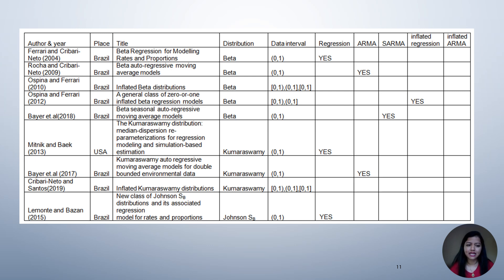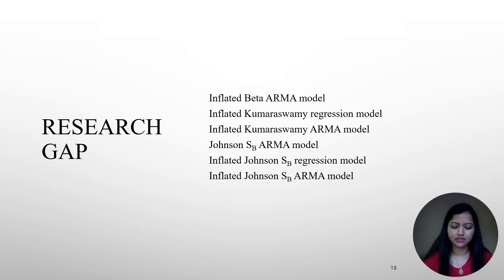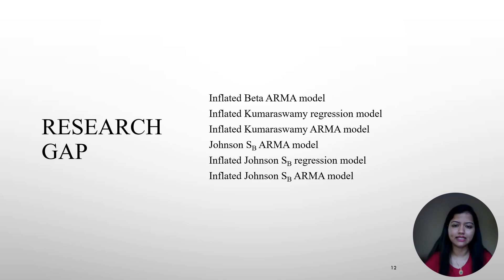In 2015, Lemonte and Bazan introduced Johnson SB distribution for the regression case. There are only a few limited models introduced in this area, so there is a research gap and scope for the following models: inflated beta autoregressive moving average model, inflated Kumaraswamy regression model, inflated Kumaraswamy autoregressive moving average model, Johnson SB autoregressive moving average model, inflated Johnson SB regression model, and inflated Johnson SB autoregressive moving average model.